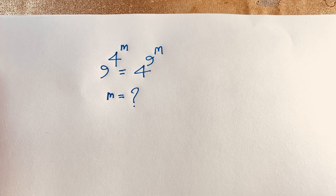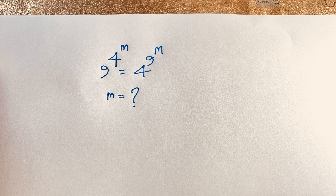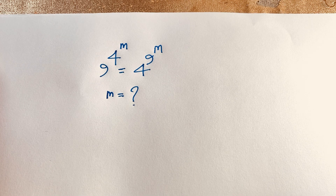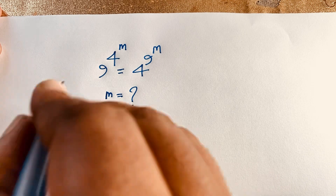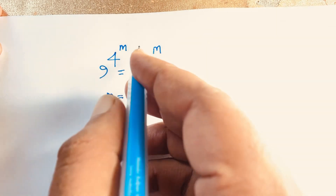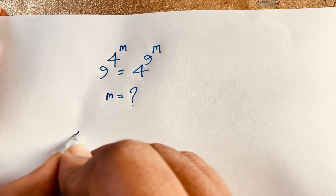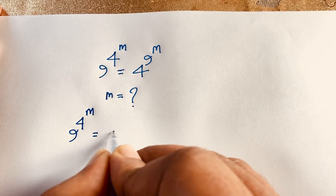Hello everyone, welcome to Rasha's classroom. Today we will solve this interesting exponential equation: 9 to the power of 4 to the power m is equal to 4 to the power of 9 to the power m. We'll find out the value of m in this exponential equation. So let's start our question.